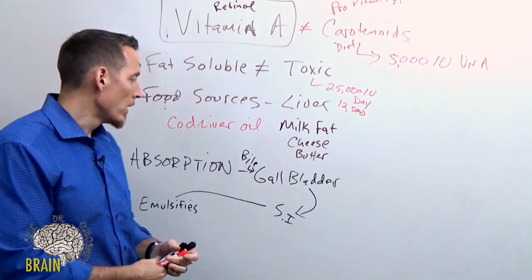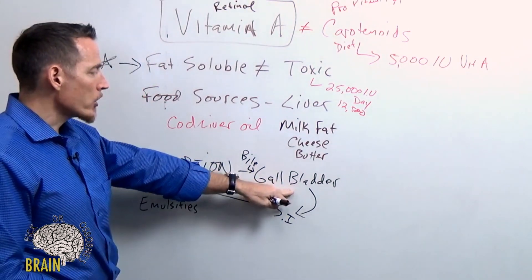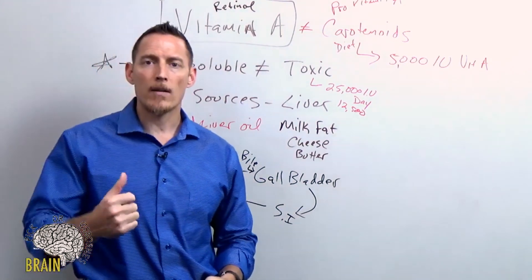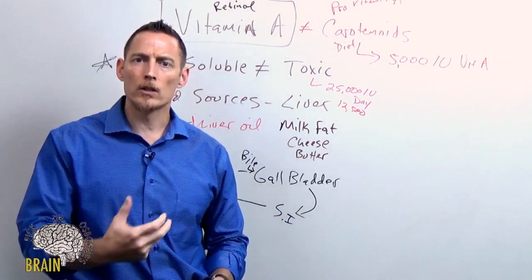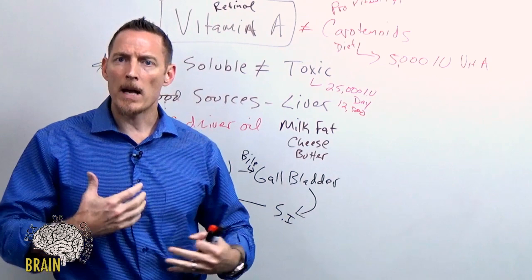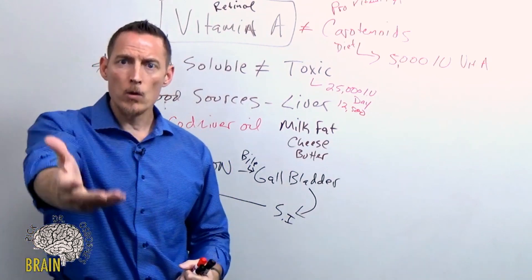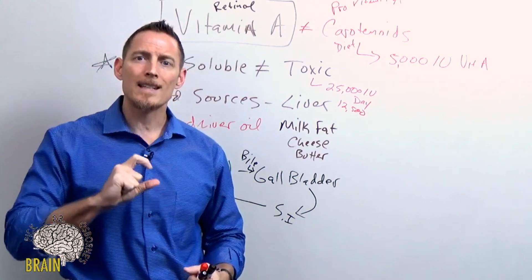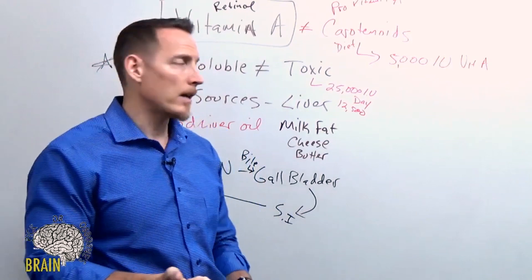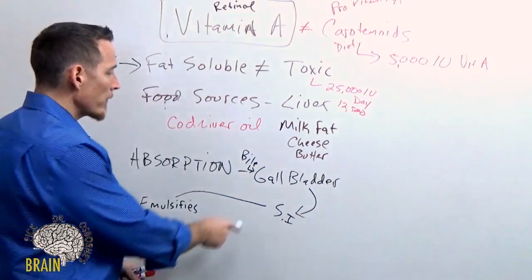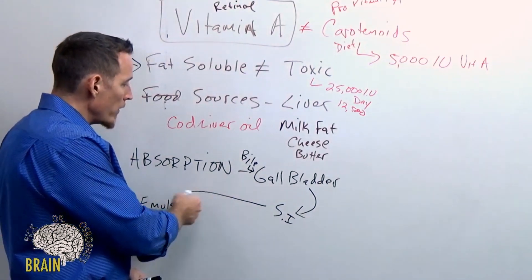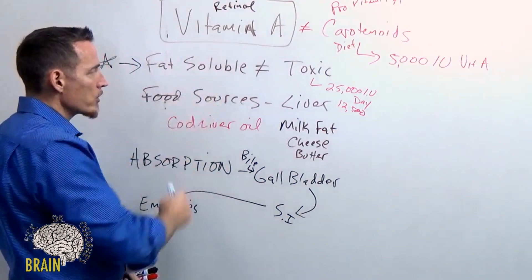If you don't have a functioning gallbladder - if maybe you've had your gallbladder removed, or maybe you have a long-standing history of severe gluten sensitivity where you have fat malabsorption, a disease like celiac disease where you're malabsorbing fat - those of you who have these issues are going to be at risk for developing vitamin A deficiency. If you don't have a functional gallbladder or if you have a history of fat malabsorption, this could be part of your problem - a vitamin A deficiency can develop.